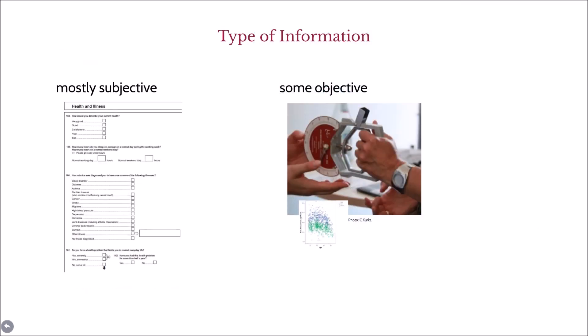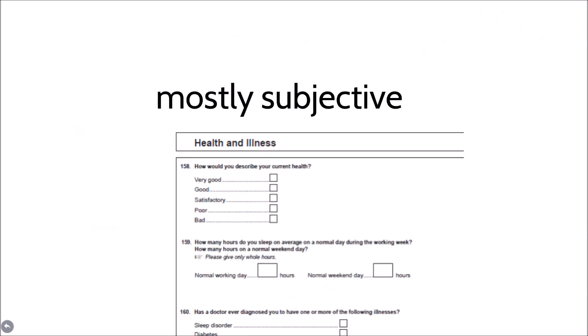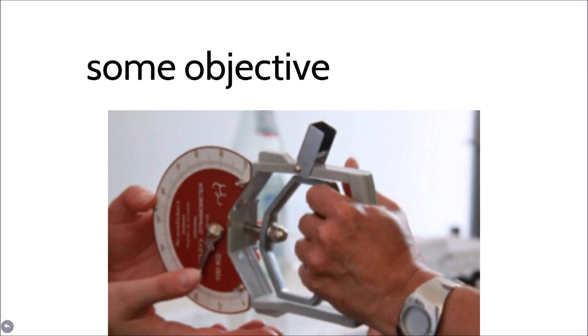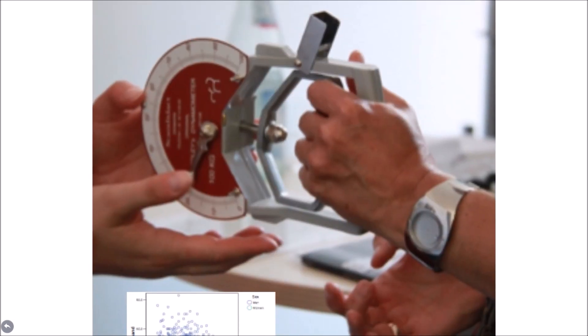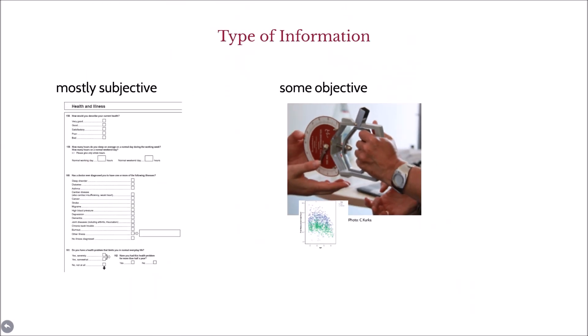While most of the information we collect is subjective, some is objective. There is an objective measure for physical fitness, for example. This so-called grip strength test is considered an omnibus measure for physical health. A number of objective measures have been included in the SOEP innovation sample over the years. If you have more interest in this, please check out the documentation on the SOEP innovation sample.